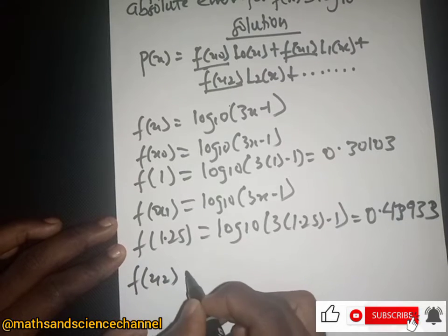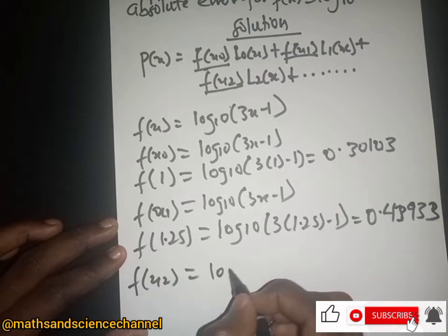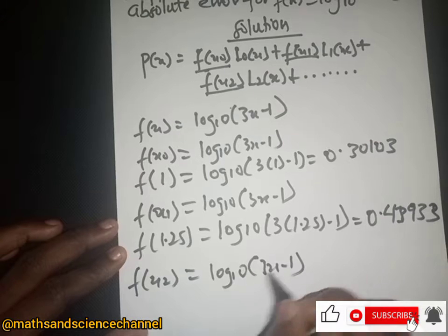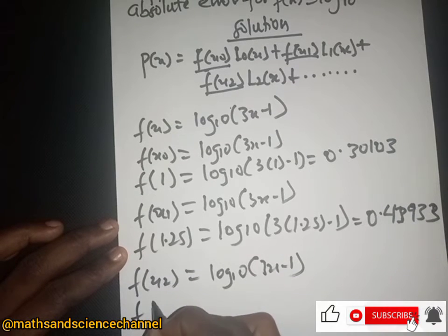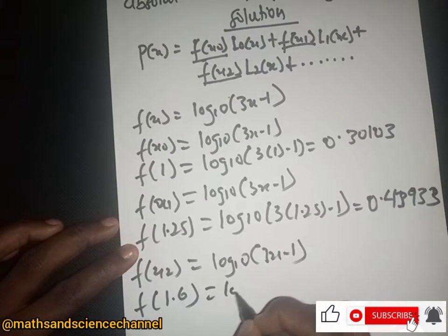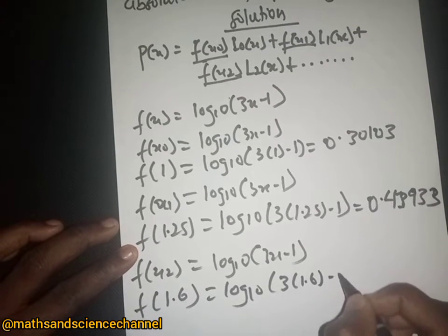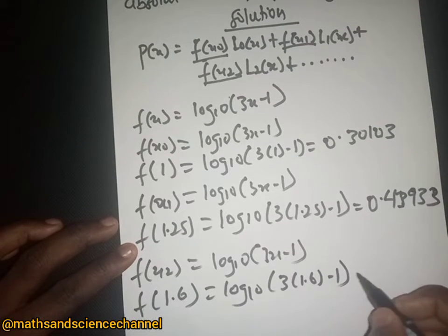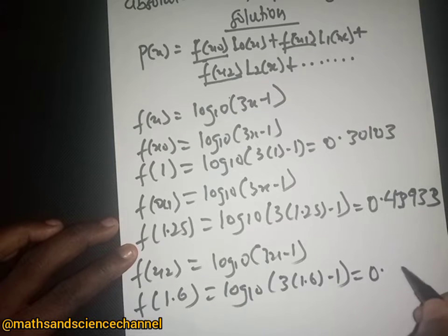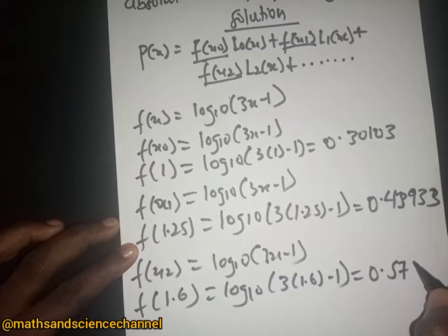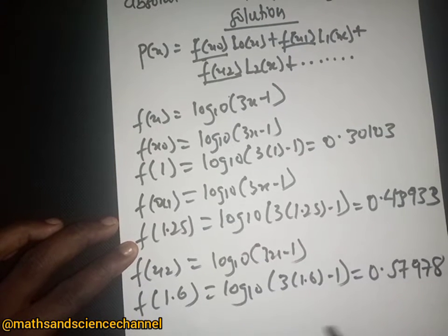For f(x₂), x₂ is 1.6, so we have log base 10 of (3×1.6 - 1), and we get 0.57978.